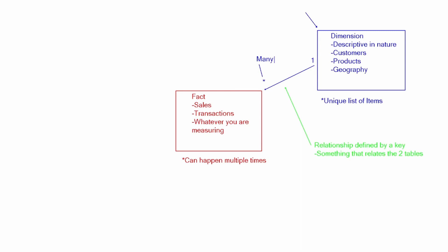In the dimension table, the key column is unique. For example, a customer ID appears one time in the dimension table and many times in the fact table. Similarly, a product ID occurs one time in the dimension table — that's why it's the one side — and can occur multiple times in the fact table, making it the many side. The key column is essentially the same column in both tables, but unique in the dimension table and repeatable in the fact table.